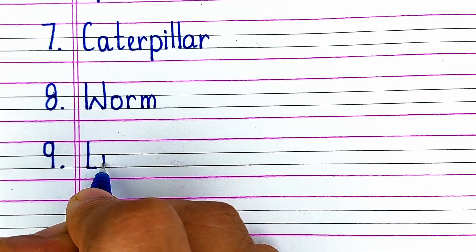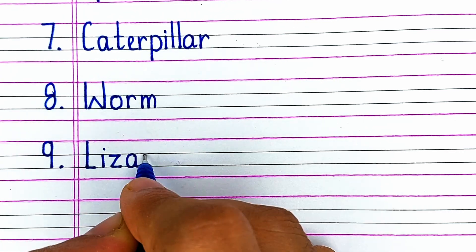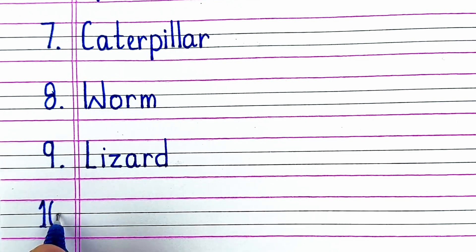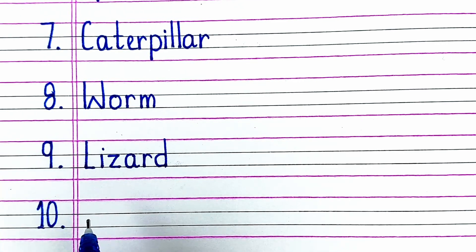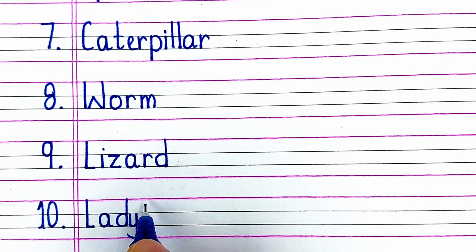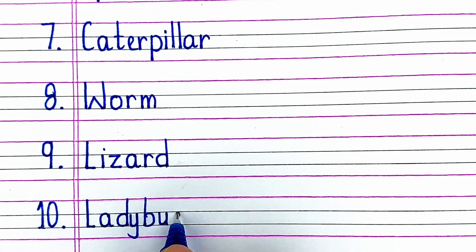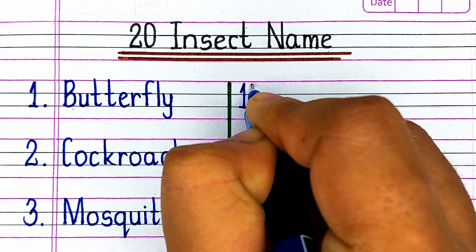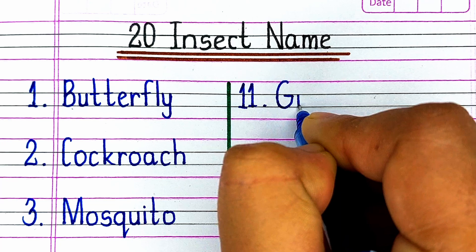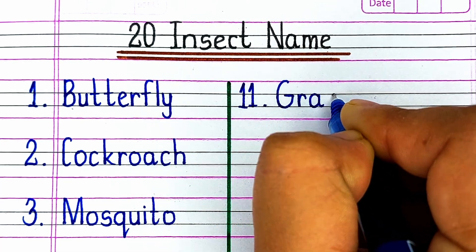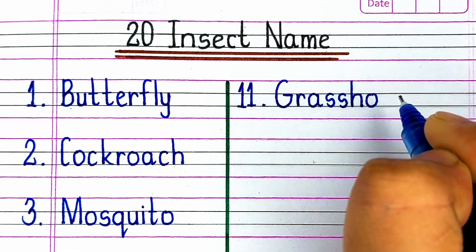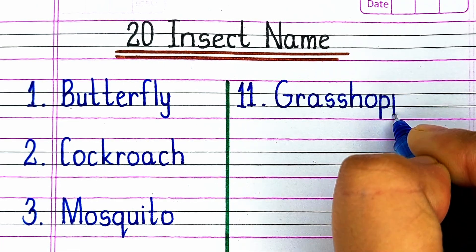Next is L-I-Z-A-R-D, Lizard. Next is L-A-D-Y-B-U-G, Ladybug. Next is G-R-A-S-S-H-O-P-P-E-R, Grasshopper.